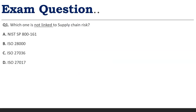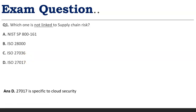Now let's cover a few exam questions. First: which one is NOT linked to the supply chain? We have seen that NIST SP 800-161, ISO 28000, and ISO 27036 are the three supply chain standards. The answer is ISO 27017, which is a cloud-specific specification — not a supply chain standard.